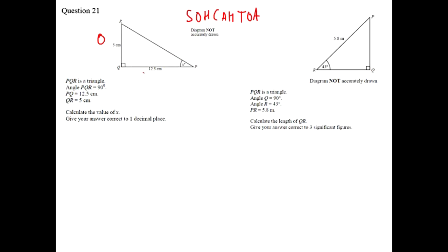So we'll label this triangle. We've got O, A and H. H doesn't feature because we don't have that length and we're trying to find angle X here. So we've got O and A which means we're dealing with tan.